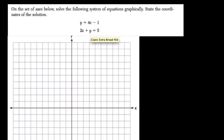So y equals 4x minus 1. Well, that just means negative 1 is your y-intercept and your slope is 4. So up 4, right, over 1.